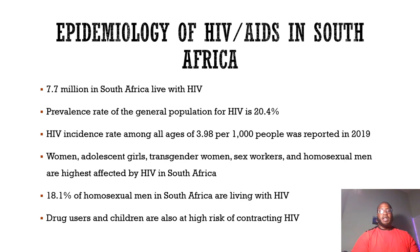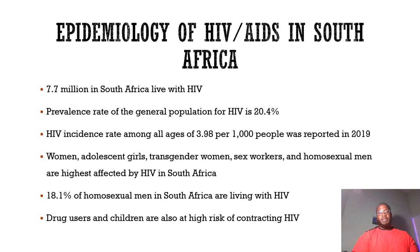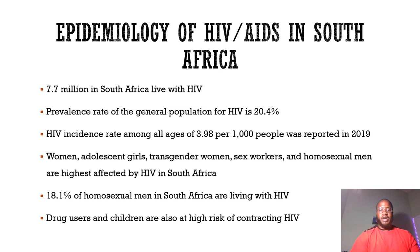Some epidemiology of HIV and AIDS in South Africa: 7.7 million people in South Africa live with HIV. The prevalence rate of the general population is 24.4%, meaning about one in every five people in South Africa lives with HIV. HIV incidence rates among all ages were 3.98 per 1,000 people, reported in 2019. Women, adolescent girls, transgender women, sex workers, and homosexual men are most highly affected. 18.1% of homosexual men in South Africa are living with HIV, and drug users and children are also at high risk.